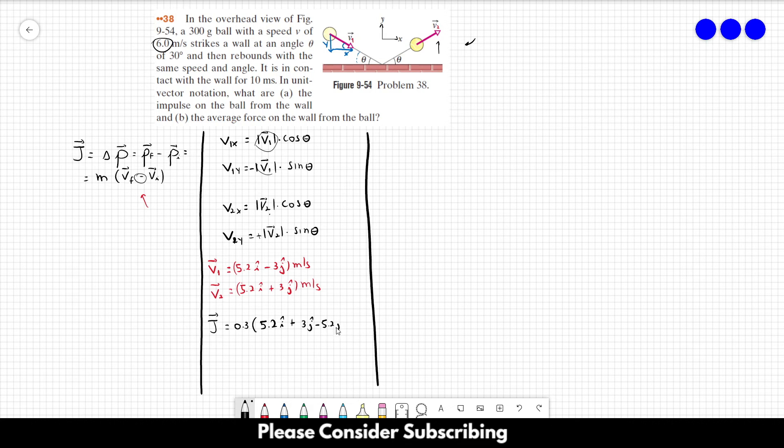You have a minus here, minus 5.2i plus 3, 5.2i plus 3j. And this is equal to 0.3 which multiplies 6j.